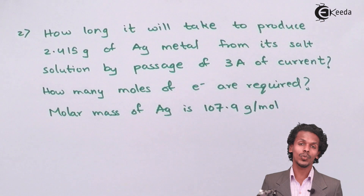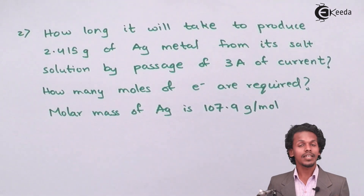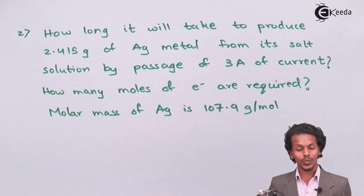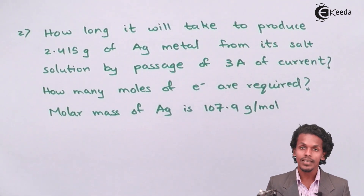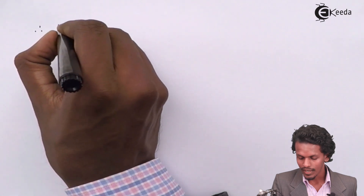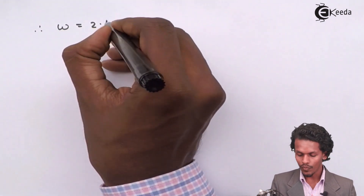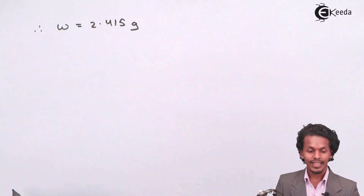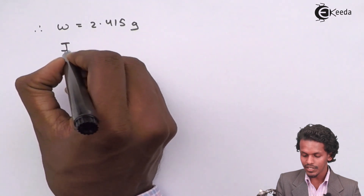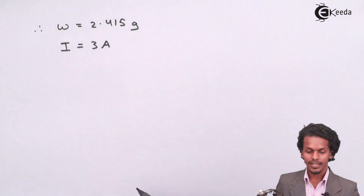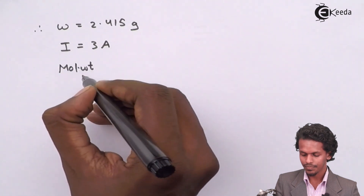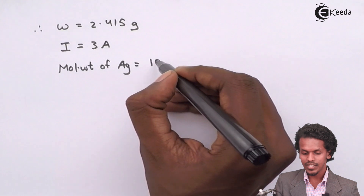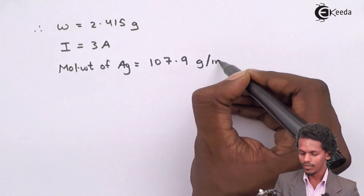The first thing we have to do is extract the data from the given question. They have given us the weight of the substance being deposited: W = 2.415 grams. The current is given as I = 3 amperes. The molecular weight of Ag is given as 107.9 grams per mole.